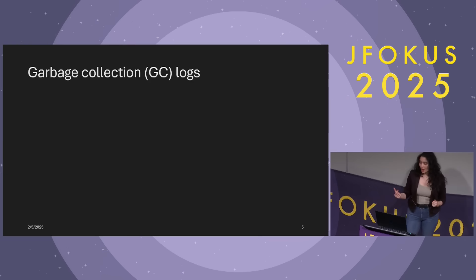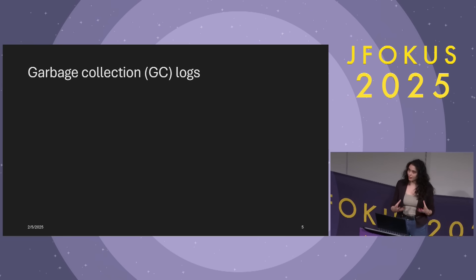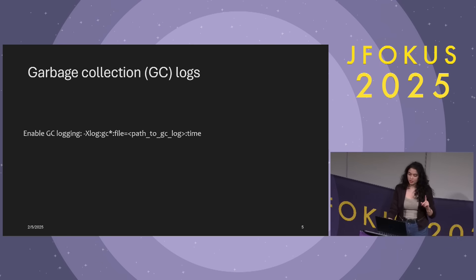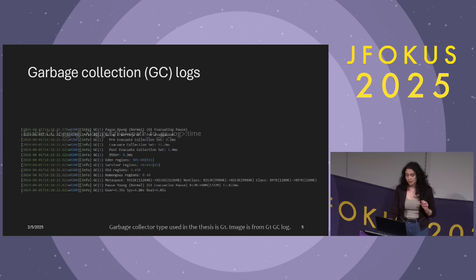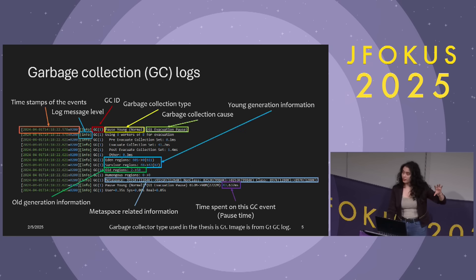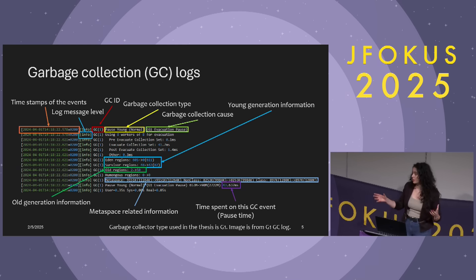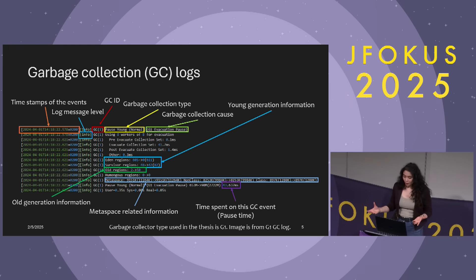Garbage collection logs. Why garbage collection logs? Because they have some cool information about the usage of memory during runtime. We can enable GC log generation with a JVM flag. In our work, we used G1 as the garbage collector. Here is an example snippet from a G1 GC log. To create the dataset, we parsed it to extract information like timestamps, GC ID, garbage collection calls, and size information of different regions.